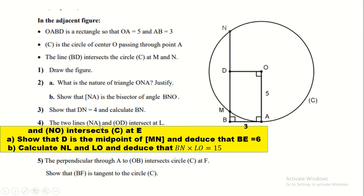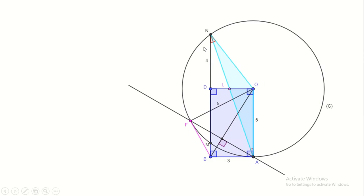The two lines NA and OD intersect at L. Now we should join NA, which will cut OD at L. Also, NO intersects the circle C at E — when we produce NO, it will cut the circle at a point E. Show that D is the midpoint of MN and deduce that ME equals 6.